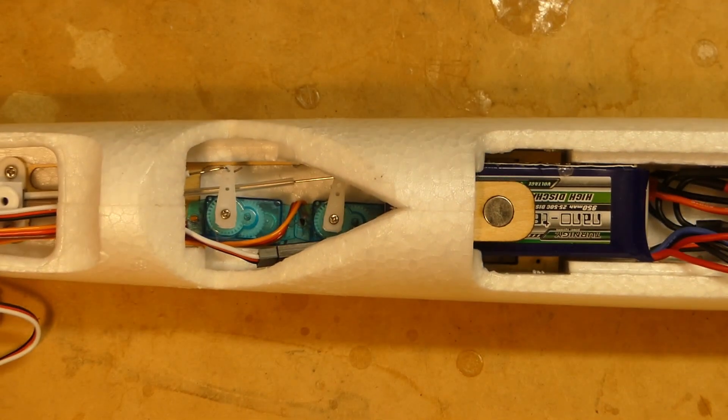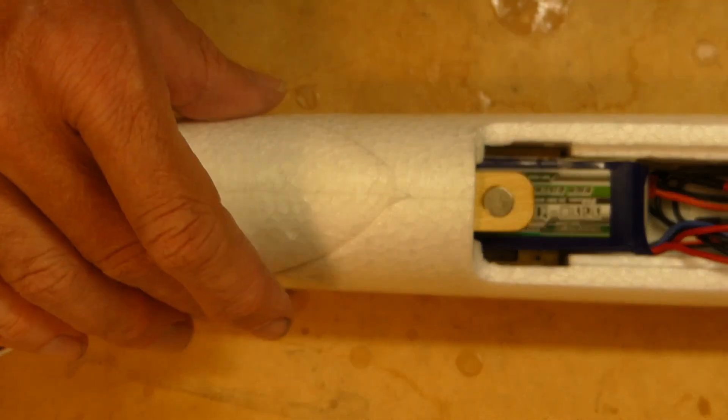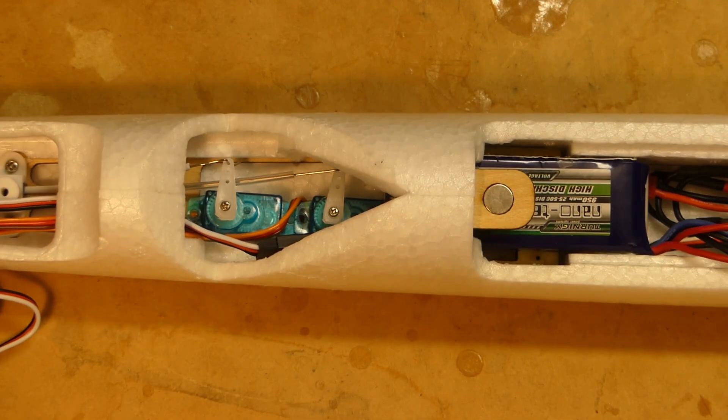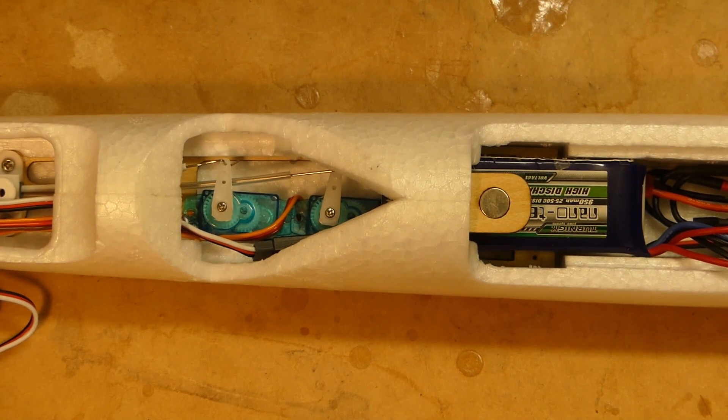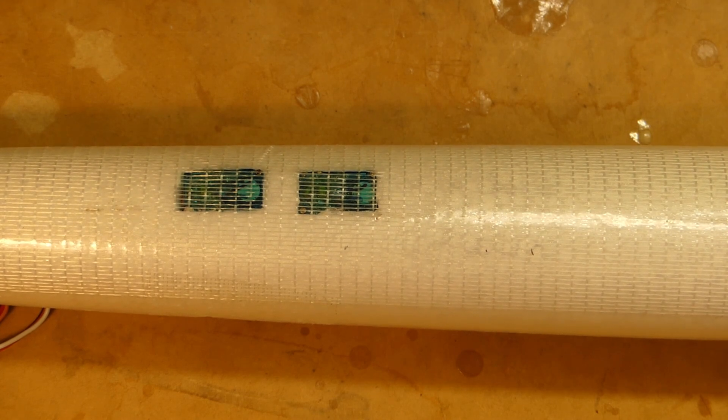The servos sit even further back behind a hatch that I had to cut to get them in. They are simply pushed through the fuselage to the point where they actually come out on the other side behind some glass fiber tape.